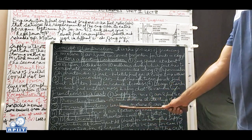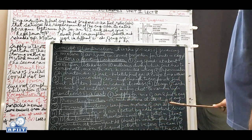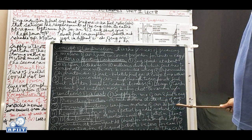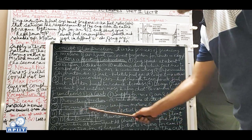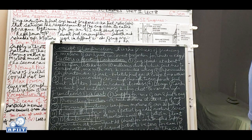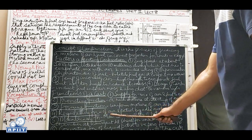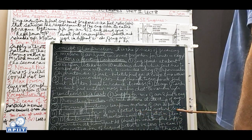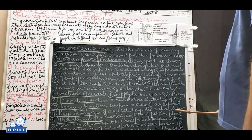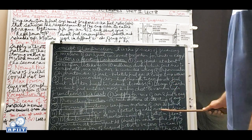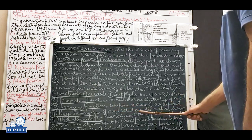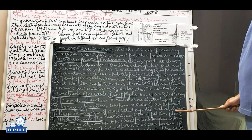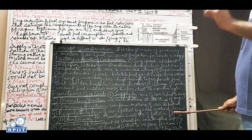Third: forming function - forming a uniform mixture of air and petrol depending upon the engine speed. Fourth: regulating function - regulating the air and petrol ratio using the idle mixture screw, also called the idling jet, which regulates the spray of petrol.